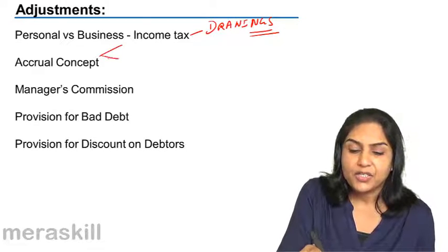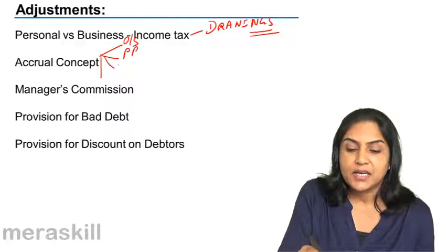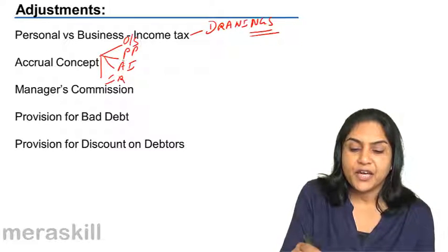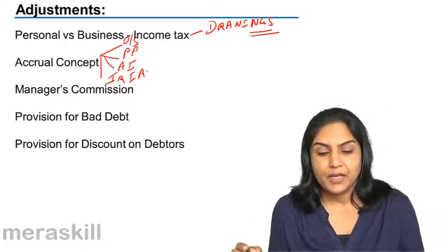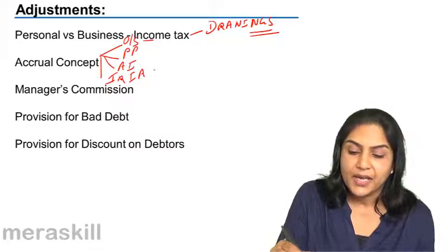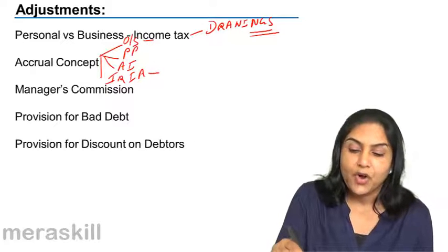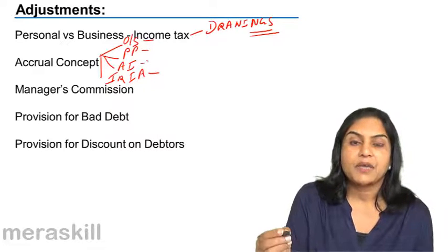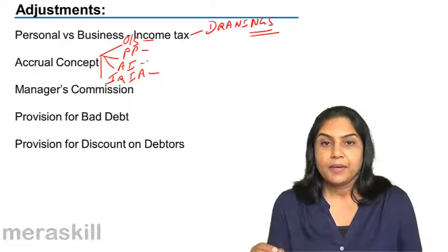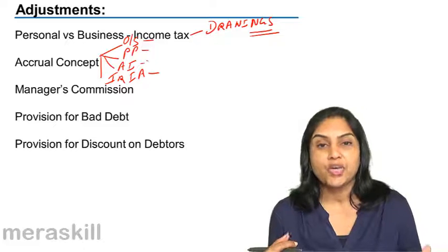We discussed the accrual concept and discussed outstanding expenses, prepaid expenses, accrued income, and income received in advance. Outstanding expense was a liability. Income received in advance is a liability because we owed money or services. Prepaid expense is an asset. Accrued income is an asset because services or cash was receivable.